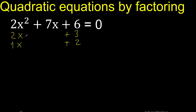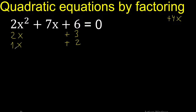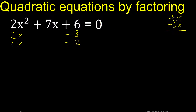Let's verify if it is correct: 2 multiplied by plus 2 is plus 4x, and 1 multiplied by plus 3 is plus 3x — that gives 7x. Equal, therefore it is correct.